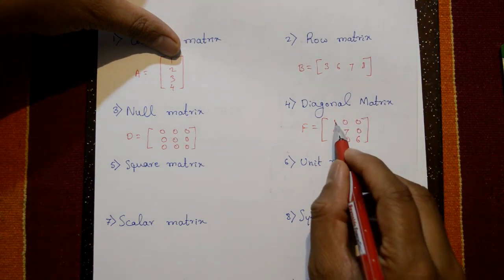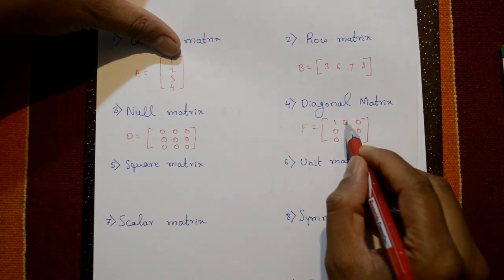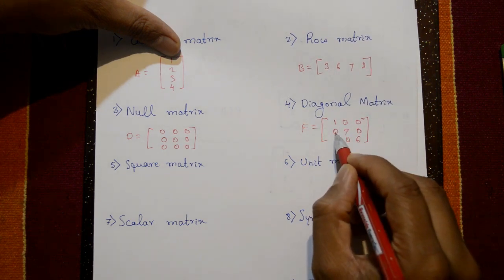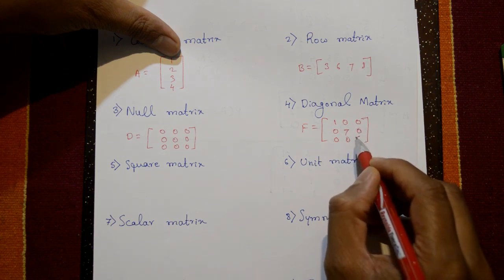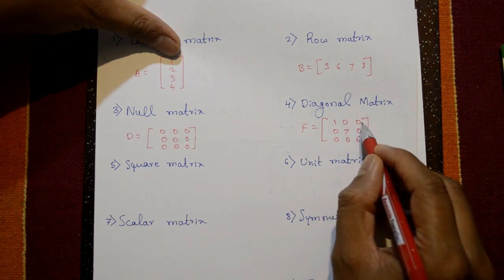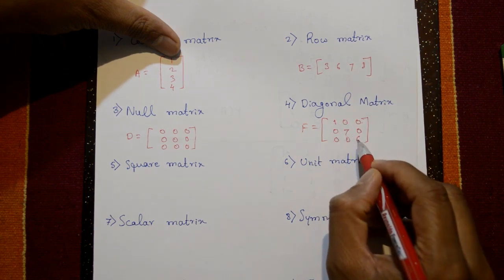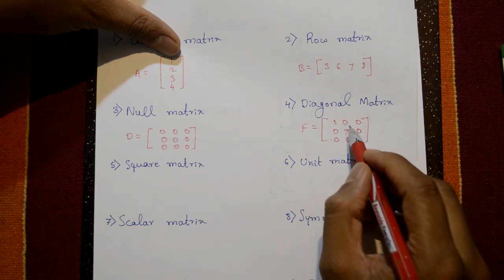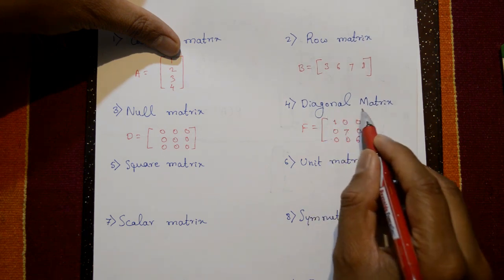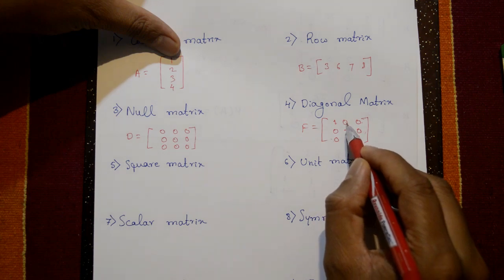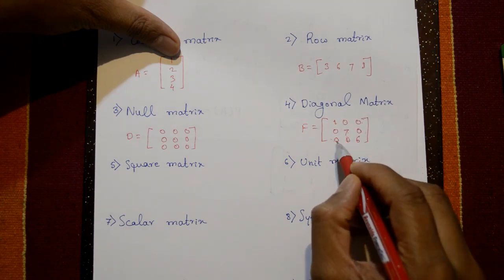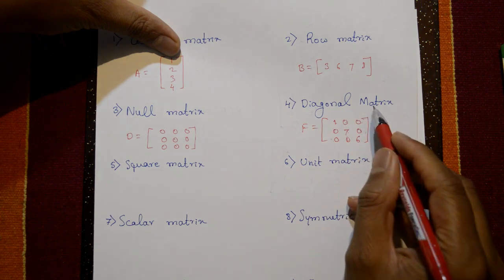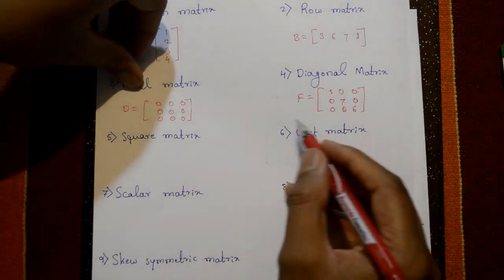The diagonal matrix has diagonal elements and non-diagonal elements equal to zero. Only the diagonal elements — for example, 1, 7, 6 — are non-zero. This is also a square matrix and it is called a diagonal matrix, where all non-diagonal elements are zero.